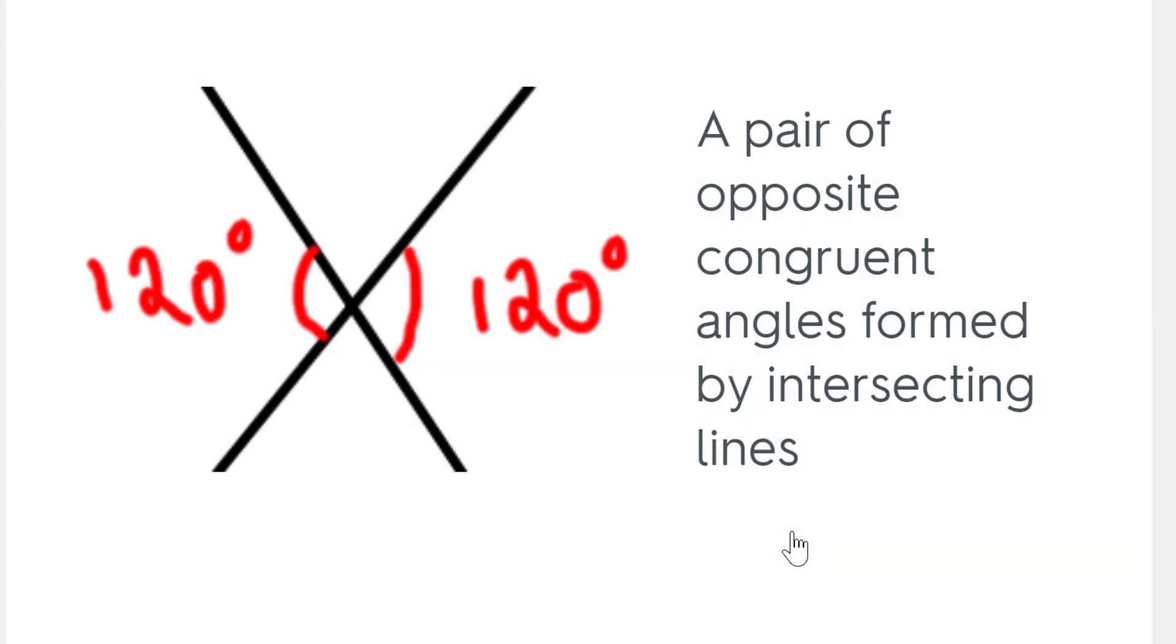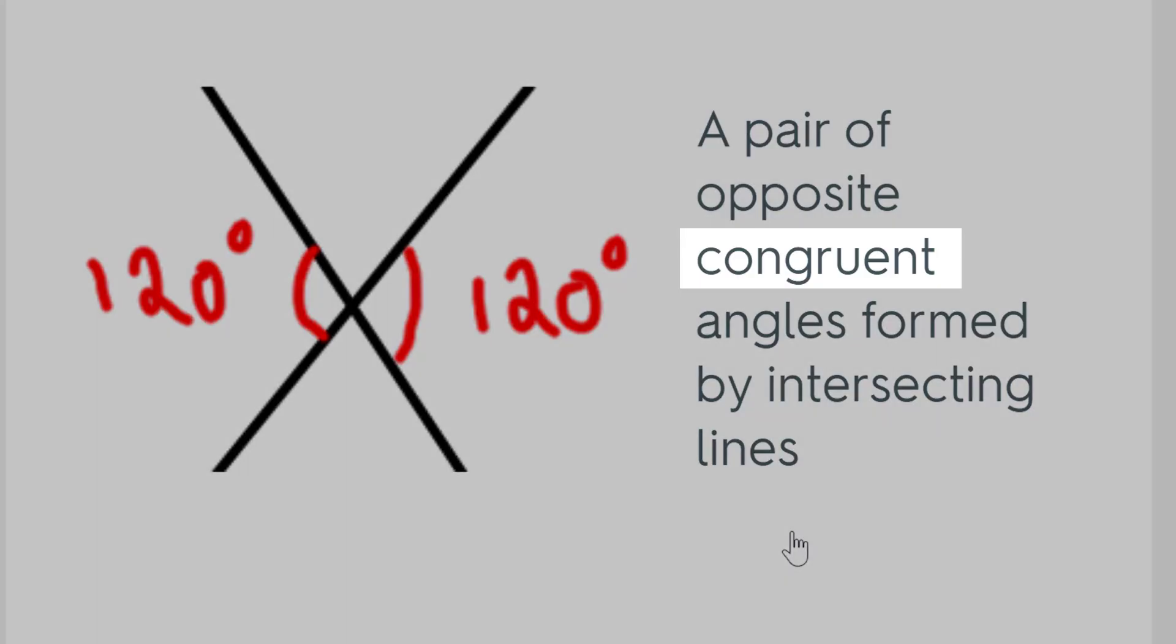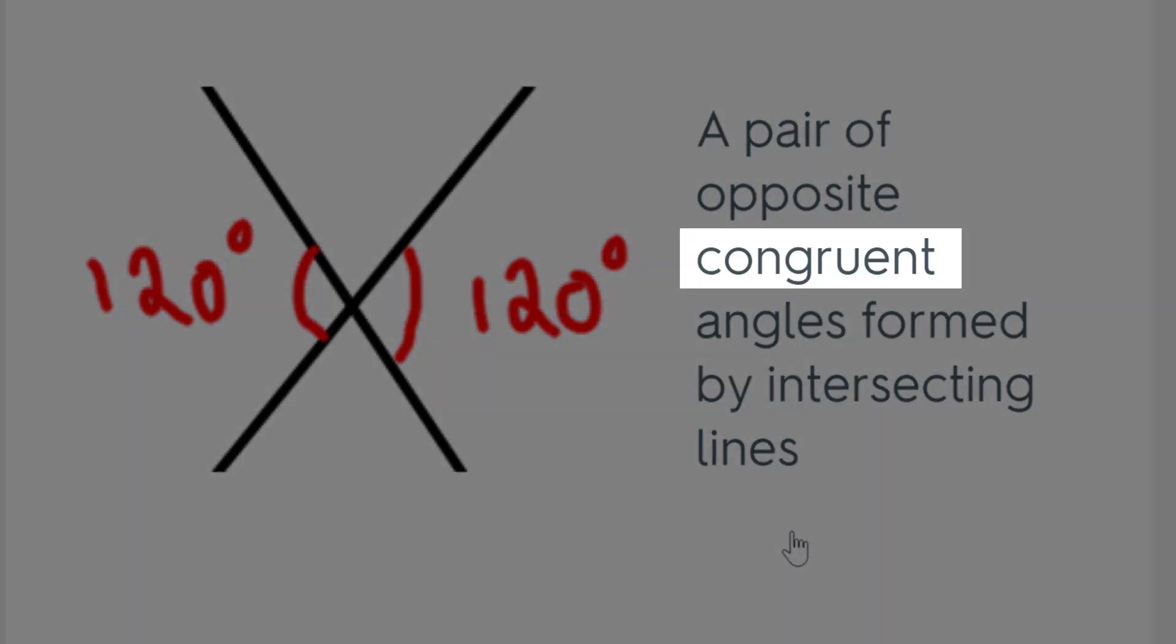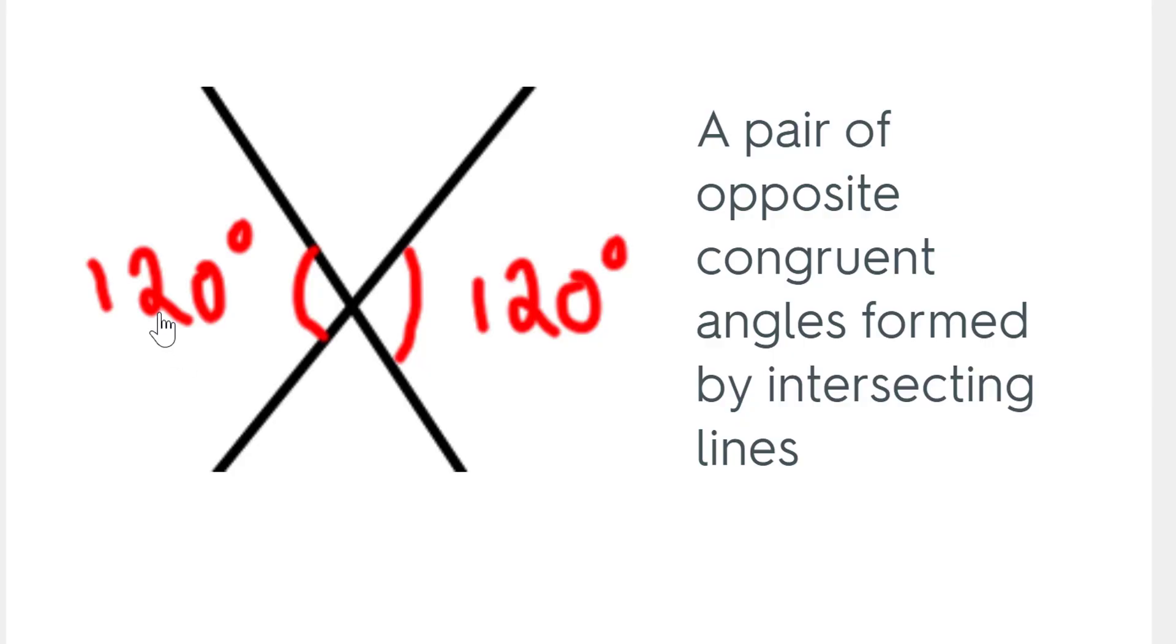We've got to know vertical angles. Vertical angles, a pair of opposite congruent angles formed by intersecting lines. These two would be 120, and they're across from each other, which means these two angles would be 60 degrees each. All of them together would equal 360 degrees. There's our circle once again.